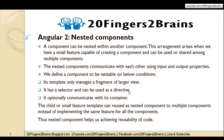The three conditions to evaluate whether a component can be nested are: its template only manages a fragment of a larger view; it has a selector and can be used as a directive; and it optionally communicates with its container.